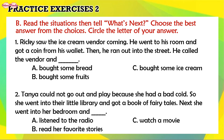A. Bought some bread. B. Bought some fruits. C. Bought some ice cream. What's the correct answer? Correct — C. Bought some ice cream.